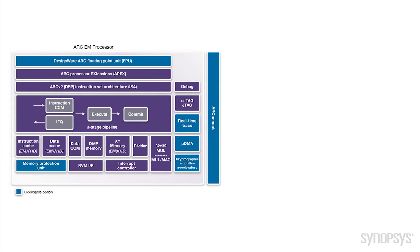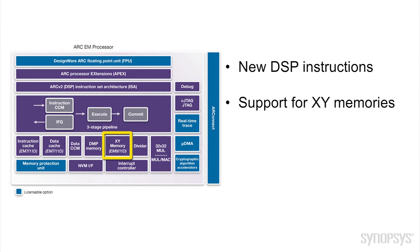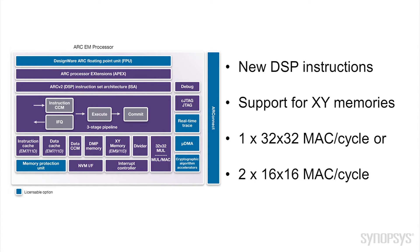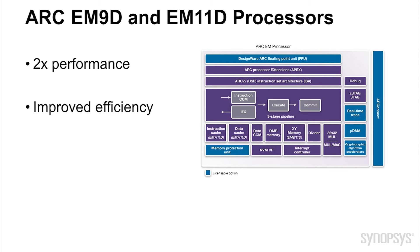The Arc-EM9D and EM11D processors implement an enhanced version of the Arc-V2 DSP ISA, adding new DSP instructions with support for multi-bank or XY memories to deliver double the signal processing performance with lower overall energy consumption. The processors have additional DSP instructions that take advantage of the XY memory banks to enable sustained throughput of one 32x32 MAC operation or two 16x16 MAC operations per clock cycle. The EM9D and EM11D offer twice the DSP performance of existing Arc-EM processors, improved efficiency, and smaller DSP code size.